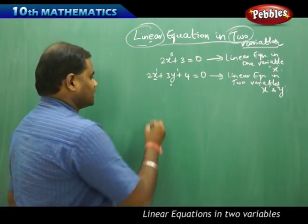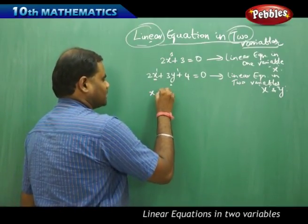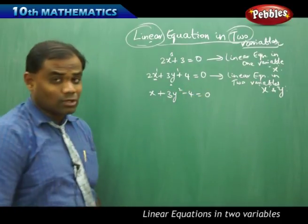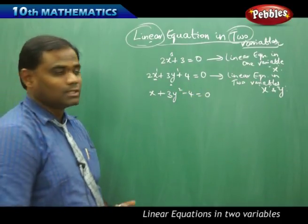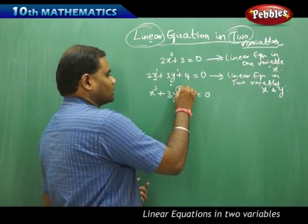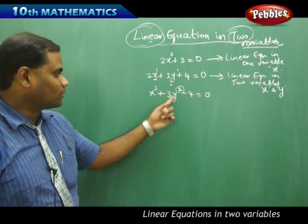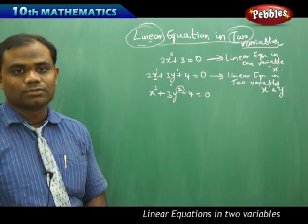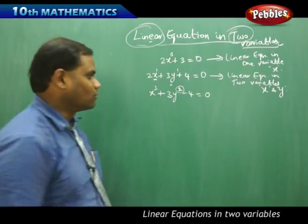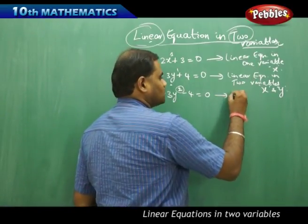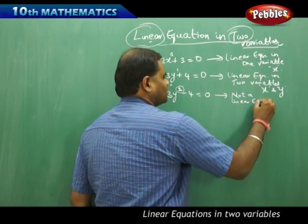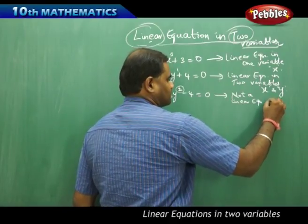For example, x plus 3y squared minus 4 equal to 0 is not a linear equation because it is linear in x but it is not linear in y, because the power of y is 2. So this equation is linear in x but not linear in y, and therefore on the whole it is not a linear equation.